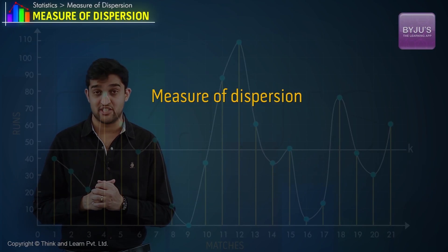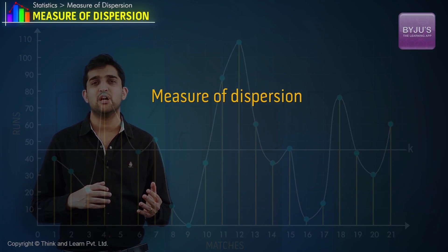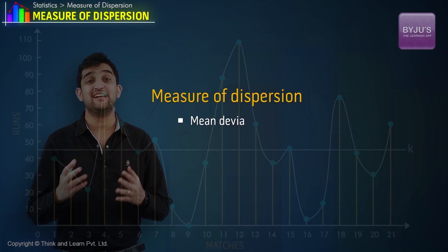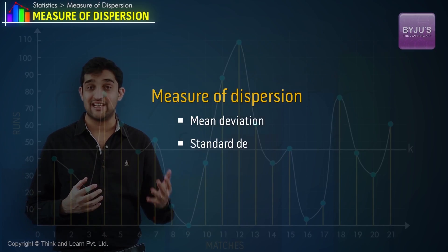There are several ways to calculate the dispersion about a given value, but we will stick to two main types of dispersions: the mean deviation and the standard deviation.